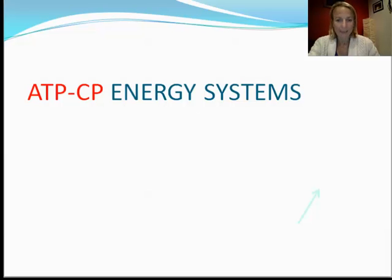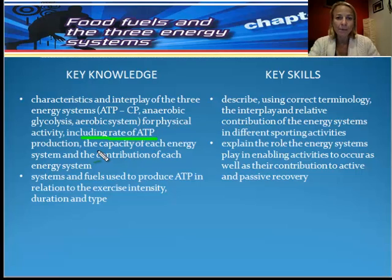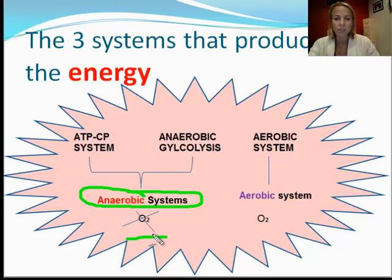This video is about the ATP-CP system. It's an anaerobic energy system, and specifically with regard to the study design we need to understand how the energy systems interplay, but we also need to know the rate — how quickly they can produce ATP — the capacity, how much energy they can provide, and also what fuels they use to produce ATP. We have our ATP-CP system, anaerobic glycolysis, both of which are anaerobic systems that do not use oxygen, and then we have our aerobic system that does utilise oxygen.